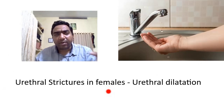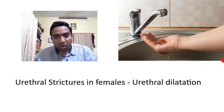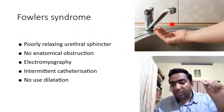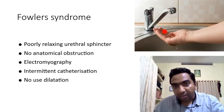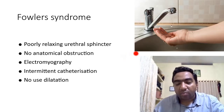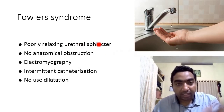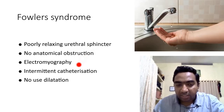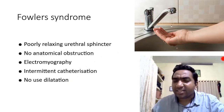Urethral strictures in females: the female urethra is three to four centimeters long; strictures can occur with birth trauma but are generally treated by urethral dilation. Fowler's syndrome is different — the urine is not coming properly, like a stricture, but it is a functional problem due to a poorly relaxing urethral sphincter. The pelvic musculature forms the urethral sphincter, and because it poorly relaxes, urine does not flow despite no anatomical obstruction. Diagnosis is by electromyography, and treatment is intermittent catheterization — dilation is of no use.